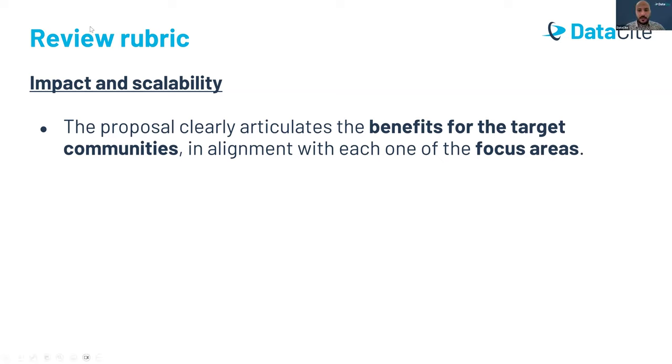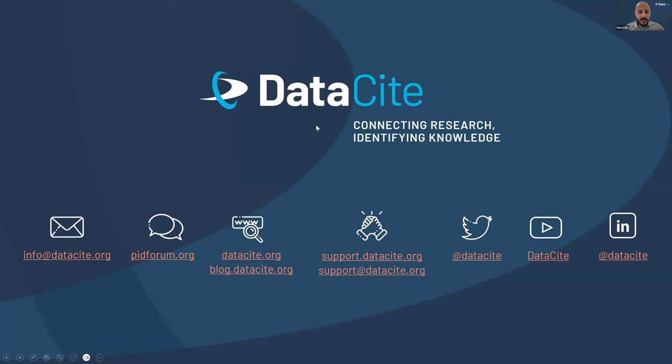Thank you, Mohamed. This is a gentle reminder — if you have any questions about the fund, please post them in the Q&A box. We have a question: can associations apply for this fund? Yes — any legal entity that works in the research ecosystem, including institutes, universities, libraries, and associations. There was also a question: can an institution apply for both outreach and infrastructure programs? Yes — we accept a maximum of two applications per organization, one in each category.